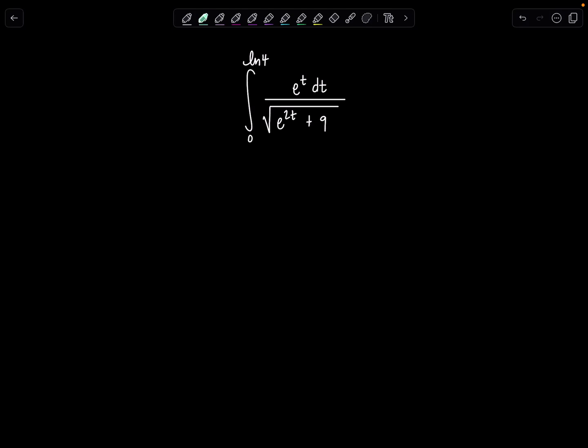Welcome to Math with Professor V. Here's your latest integral of the day. We have the definite integral from 0 to natural log of 4 of e to the t over the square root of e to the 2t plus 9 dt. I promised after the last integral of the day to do one that's a little bit less spicy, so hopefully you guys can all get this one successfully.